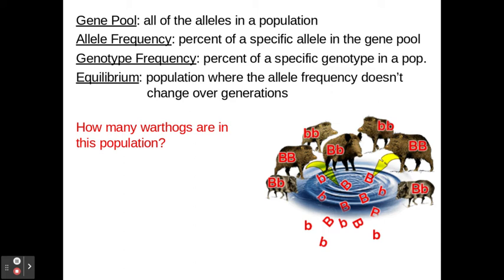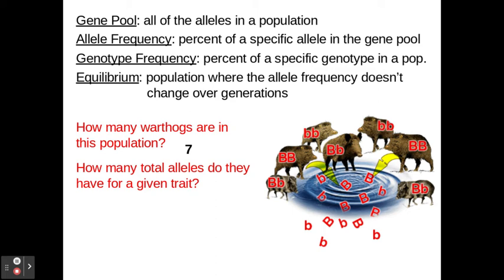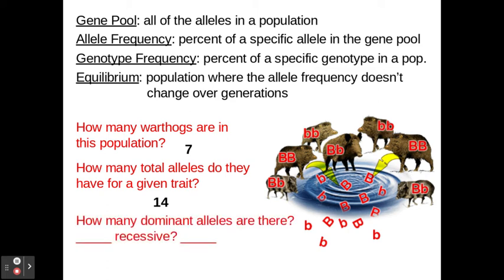In order to do that, we need to first figure out how many organisms are in the population. For these warthogs, there are seven total organisms. How many total alleles do they have for this trait? They're diploid organisms, so they have two alleles for this trait — there are two B's in the diagram for each warthog. So seven warthogs times two equals 14 total alleles. How many dominant alleles are there? Looking at the image, we count all of the big B's, now highlighted in green, and there are seven.